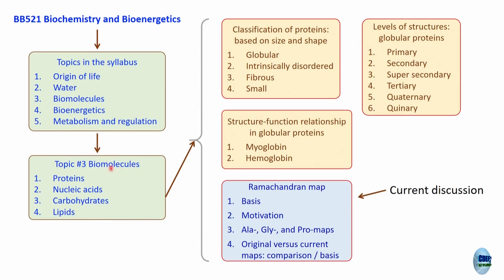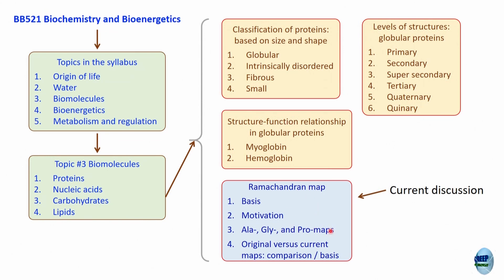Biomolecules will be dominated by proteins. In proteins, we looked at the classification based on size and shape, and the various levels of structure for globular proteins. We discussed myoglobin and hemoglobin to relate structure and function. Today and tomorrow we will discuss the Ramachandran MAP.